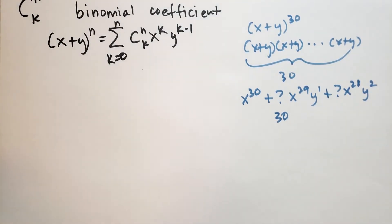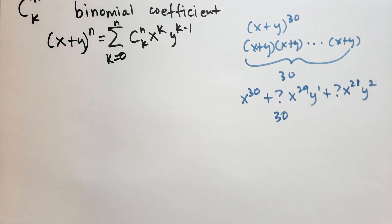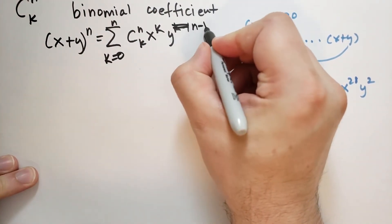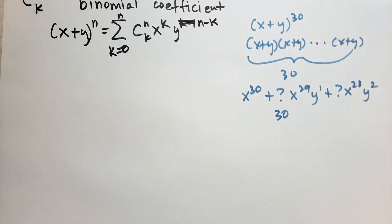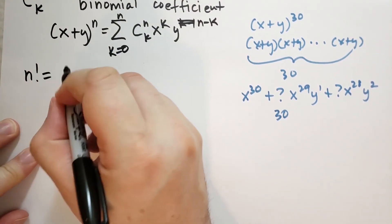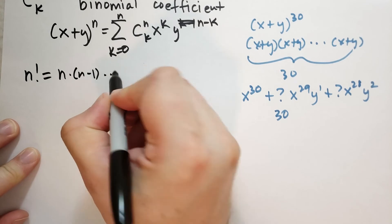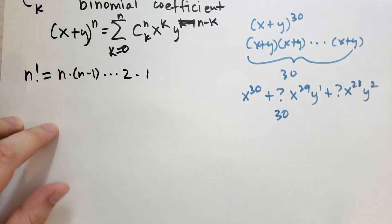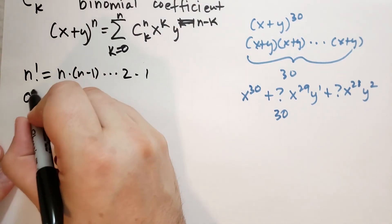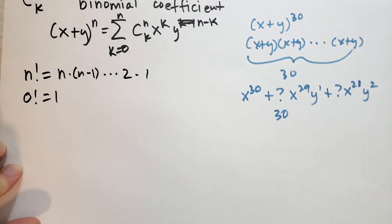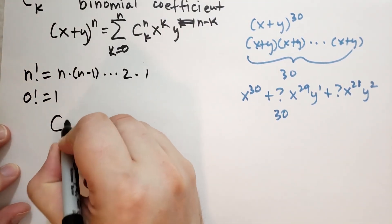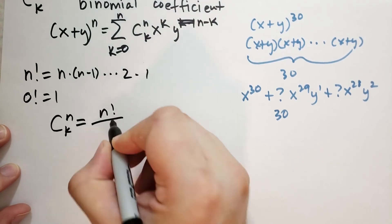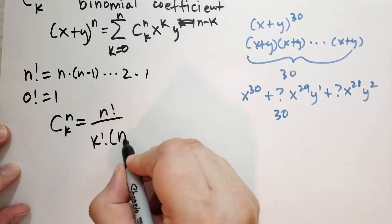C(n,k) has a simple expression using the factorial. Factorial means n times (n−1) times ... times 2 times 1 — you multiply all those numbers together — and we define 0! = 1. He says C(k,n) equals n! divided by (k! times (n−k)!). So for example, C(2,4) is 4! over (2! times 2!).